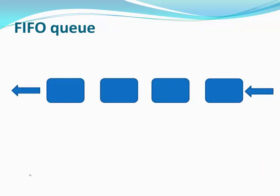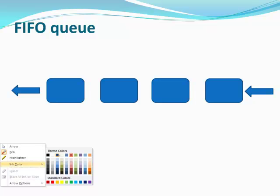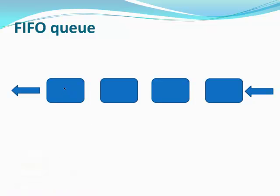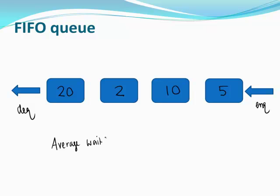To understand the concept of a priority queue, let's first understand why we study them. Take a regular queue where you dequeue from the front and enqueue from the back. Suppose you're at a grocery store checkout counter with people ahead of you: the first person takes 20 minutes, the second 2 minutes, the third 10 minutes, the fourth 5 minutes. What would be the average wait time per customer in this line, assuming no one else joins?